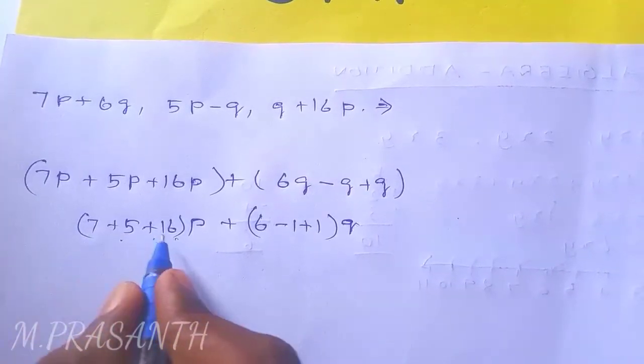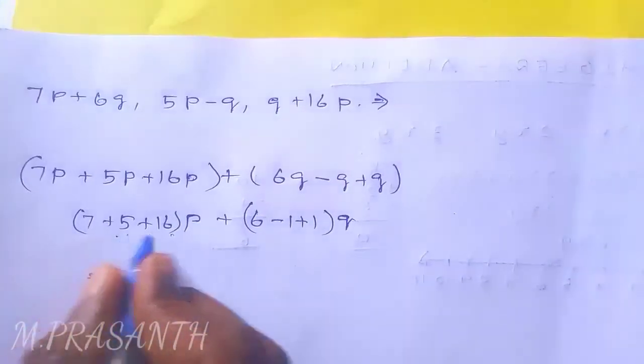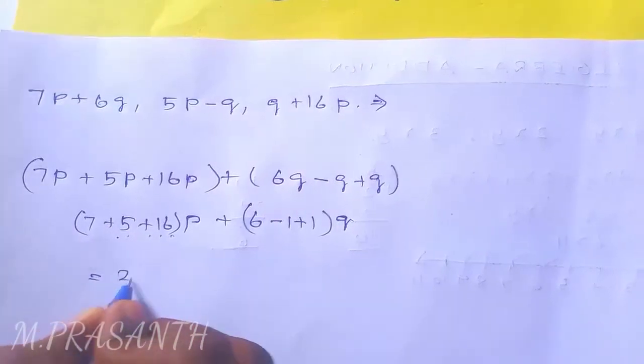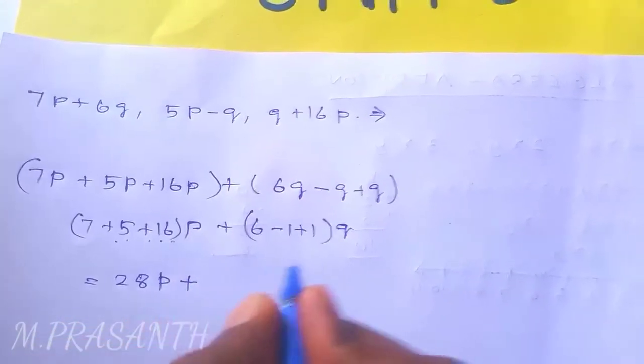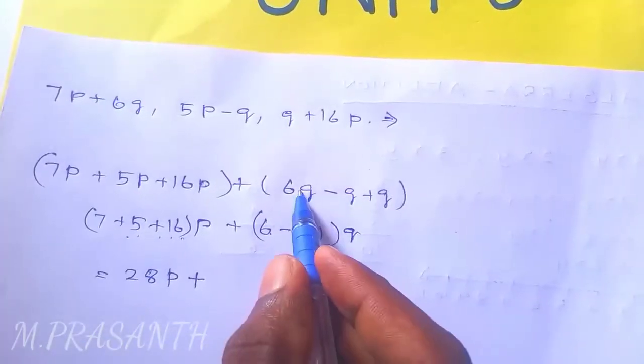So first, 7p plus 5p plus 16p, that is equal to 7 plus 5 plus 16 equals 28p.